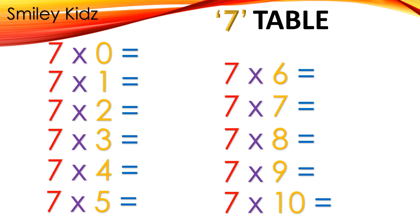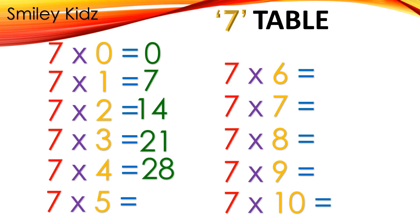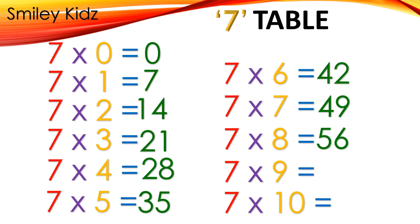Table 7: 7×0=0, 7×1=7, 7×2=14, 7×3=21, 7×4=28, 7×5=35, 7×6=42, 7×7=49, 7×8=56, 7×9=63, 7×10=70.